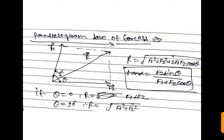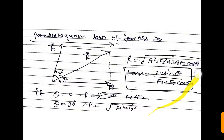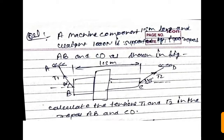Special cases: if θ = 0°, then cosθ = 1, so the resultant R = F1 + F2. If θ = 90°, then the resultant R = √(F1² + F2²). Remember all of these formulas.